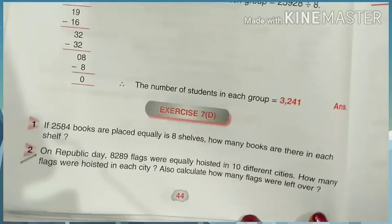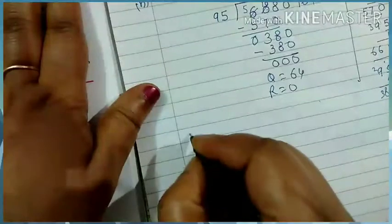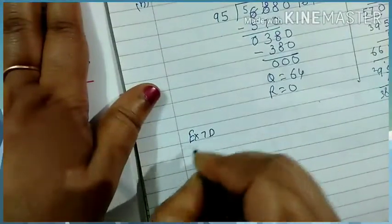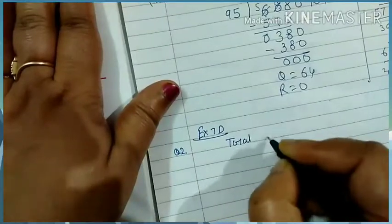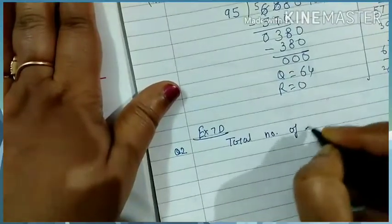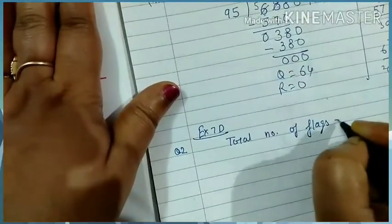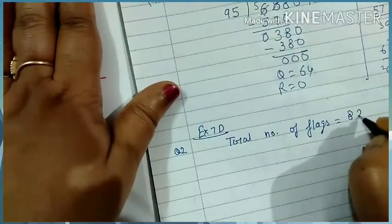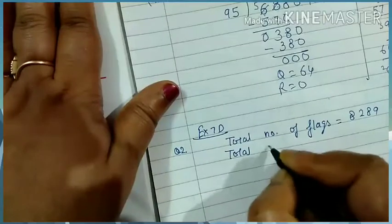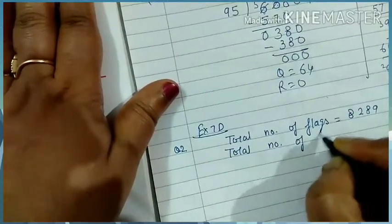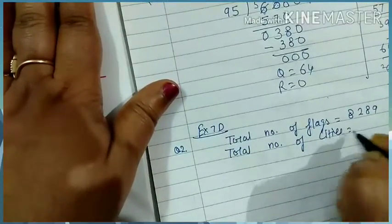So the total number of flags is how much? 8289. Let's do it in a copy so that you will easily understand. Question number 2. Total number of flags is 8289. Total number of cities is 10.